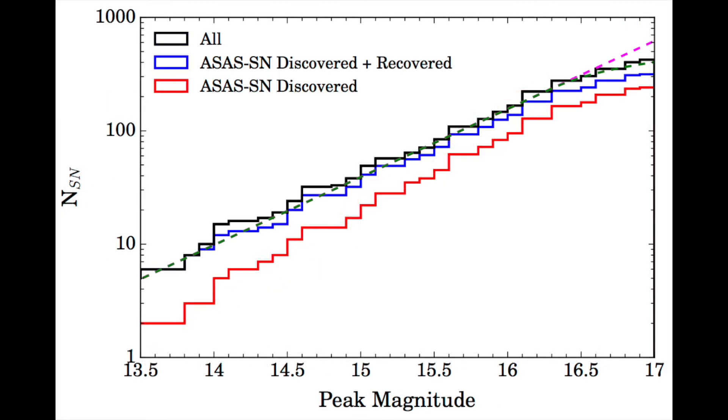Finally, this figure shows a cumulative histogram of supernovae discovered at different peak magnitudes in our full sample. The red line represents only ASASSIN discoveries, the blue line represents ASASSIN discoveries and supernovae recovered by ASASSIN, and the black line represents all supernovae in the sample.